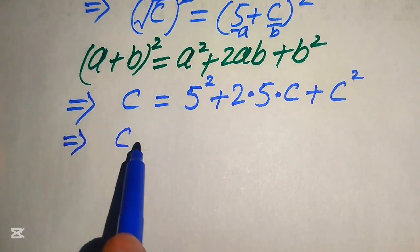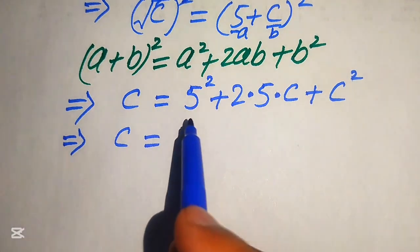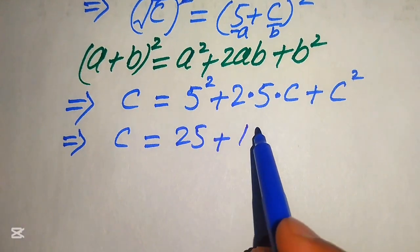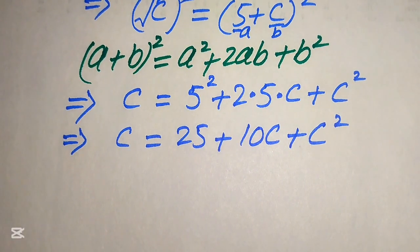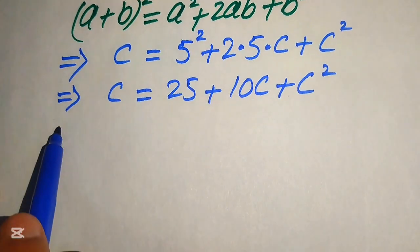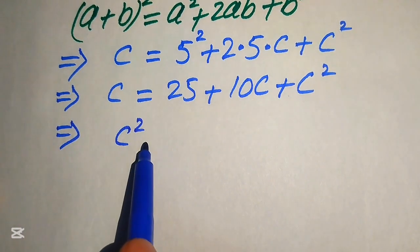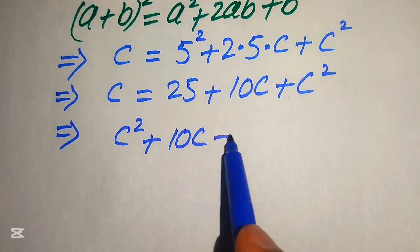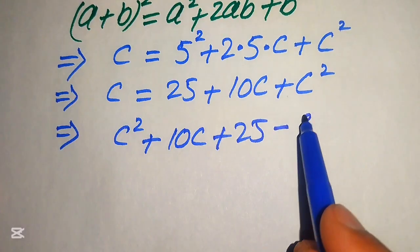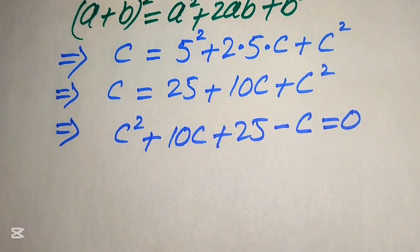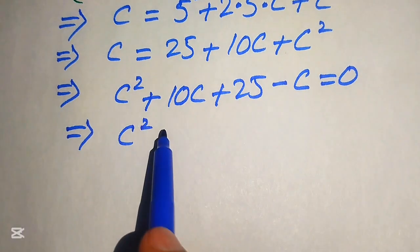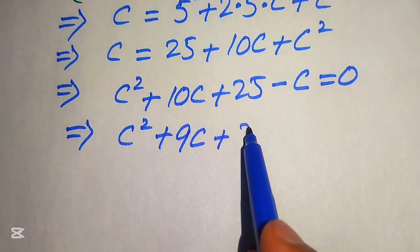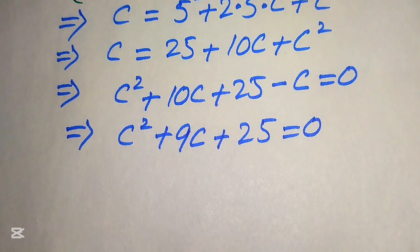In the next step we simplify: c equals 5 squared is 25, plus 2 times 5 gives 10c, plus c squared. Now we rewrite this equation into standard form by moving c to the right hand side, giving c squared plus 10c minus c plus 25 equals 0. Combining like terms, 10c minus c equals 9c, so we get c squared plus 9c plus 25 equals 0.